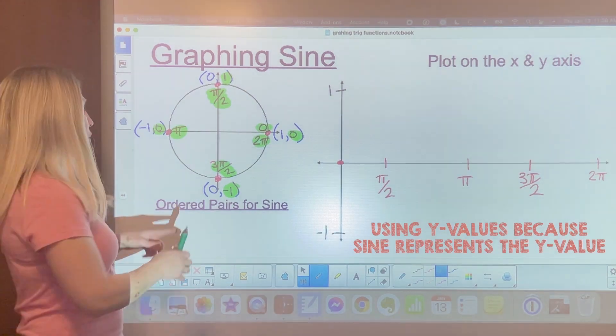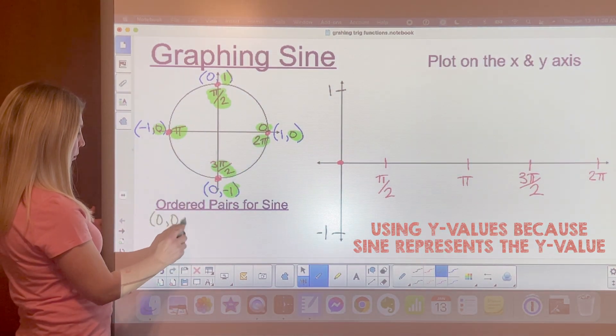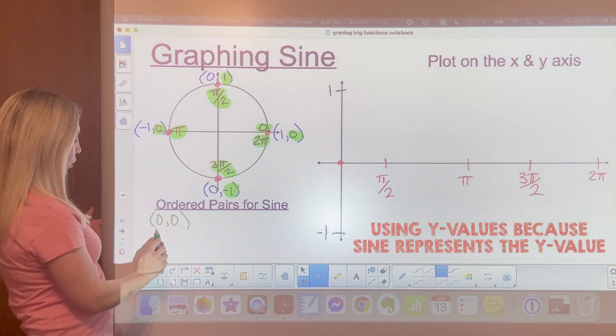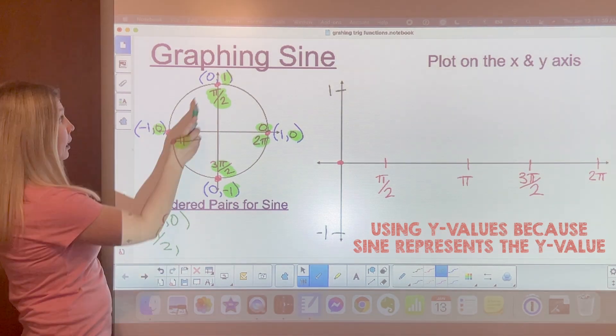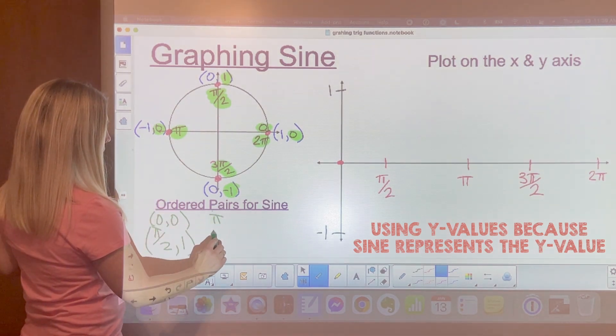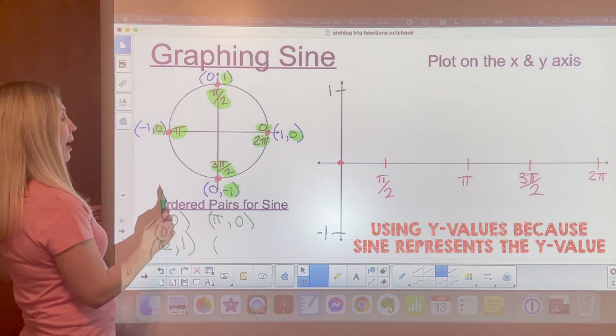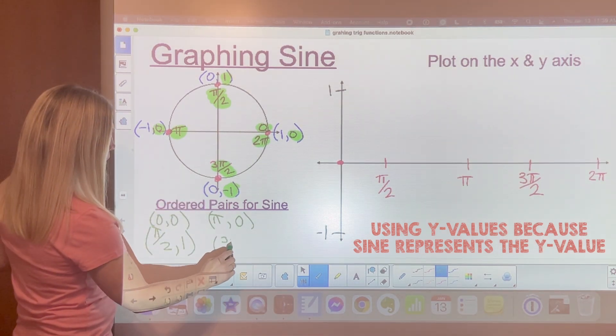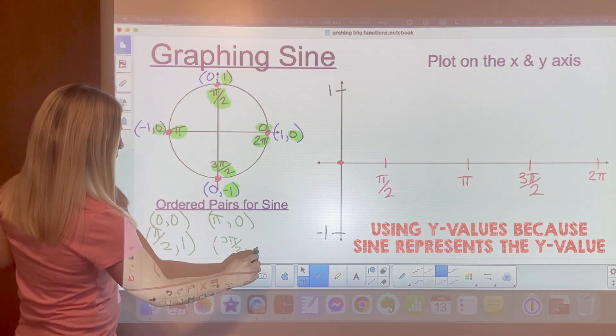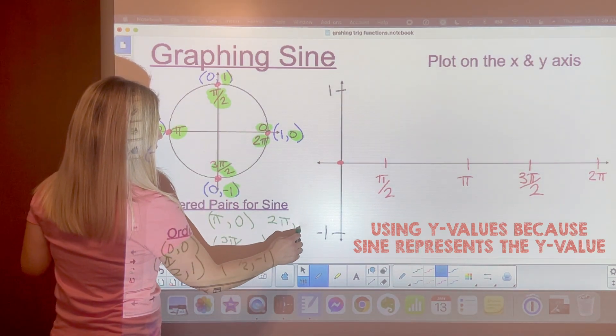These are the ordered pairs that we're going to use. We have 0, 0. Pi over 2 comma 1. Then we have pi and 0. Then we have 3 pi over 2 at negative 1. And then we have 2 pi and 0.